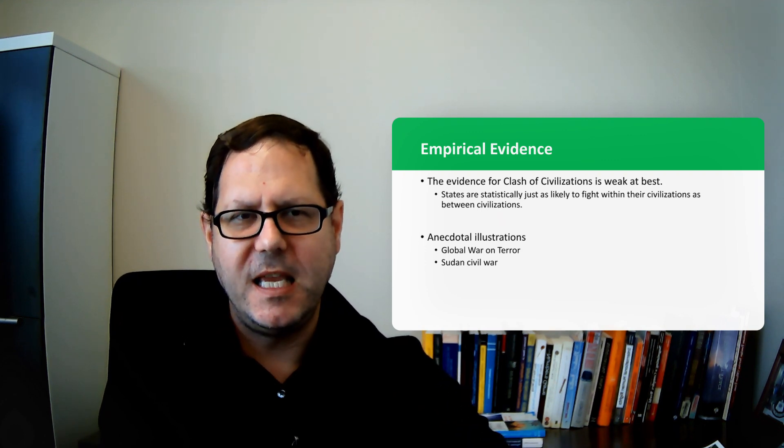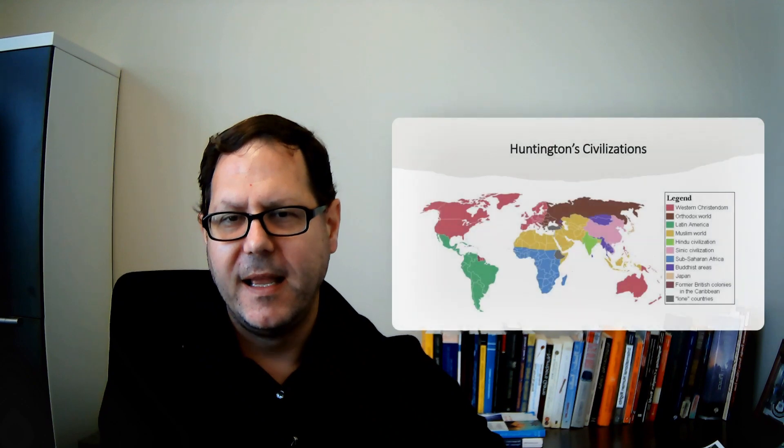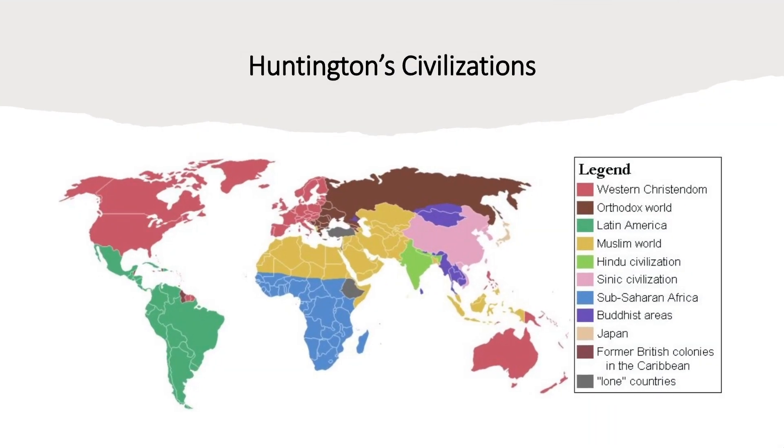Another place where we can maybe look at this is thinking about civil wars. I want to flag what goes on in Sudan because one of the predictions of Huntington's clash of civilizations thesis is that we should see conflicts occurring at what he calls the shatter zone where two civilizations meet or where two civilizations cut across the borders of a country and so if you're looking at Sudan just to the left of Ethiopia in the Horn of Africa you see cutting right through the center of Sudan is this divide between the Muslim world and sub-Saharan Africa.